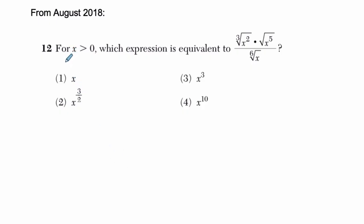Okay, so let's just read it. For x is greater than 0, we've got x in our denominator here, so we want x to be larger than 0, otherwise we would be dividing by 0. And it says which expression is equivalent to this one right here. In other words, they want us to simplify this thing.